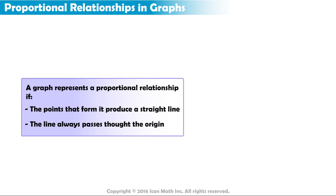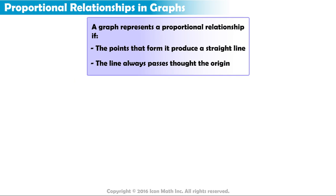So, this graph represents a proportional relationship because the ordered pairs form a straight line that passes through the origin. Now, let's use this information to determine if a graph represents a proportional relationship.